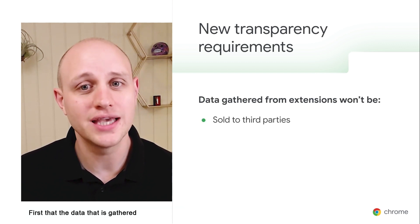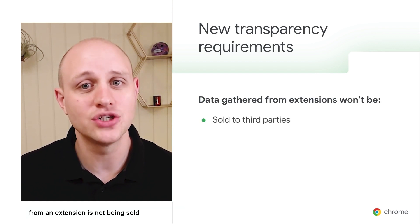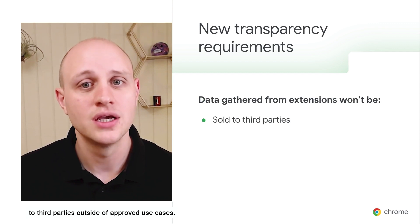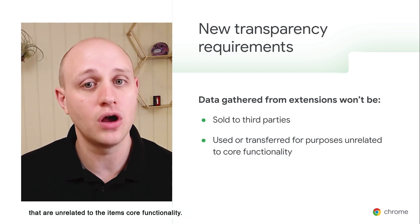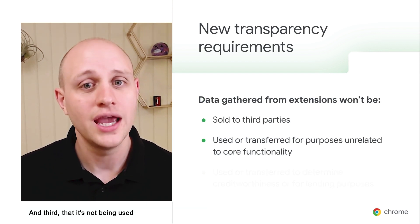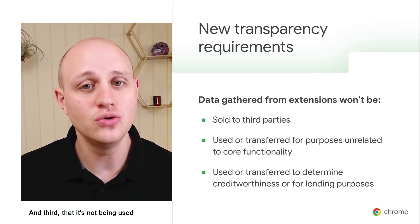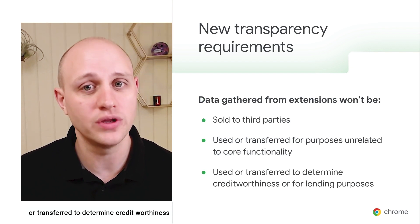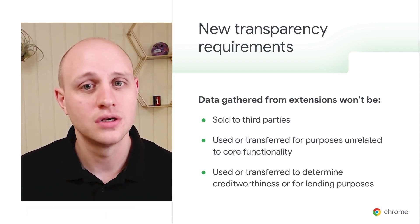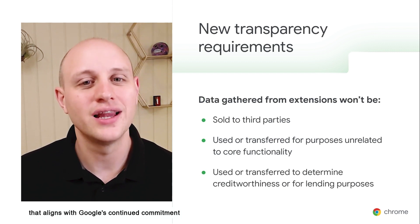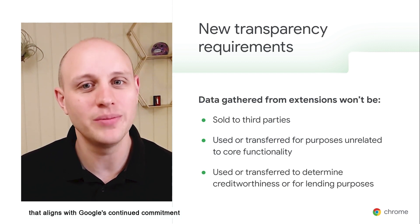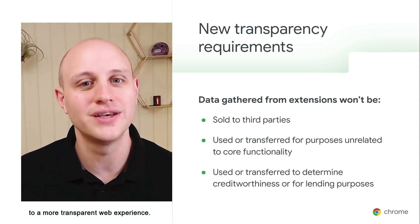The Chrome Web Store now requires publishers to declare a few important pieces of information. First, that the data gathered from an extension is not being sold to third parties outside of approved use cases. Second, that it isn't being used or transferred for purposes unrelated to the item's core functionality. And third, that it's not being used or transferred to determine credit worthiness or for lending purposes. This requirement aligns with Google's continued commitment to a more transparent web experience.